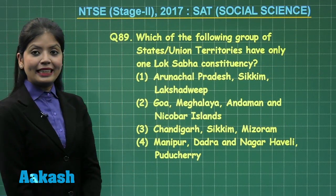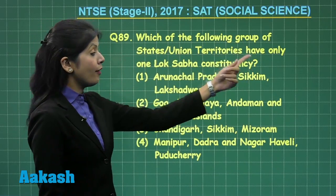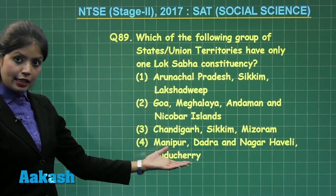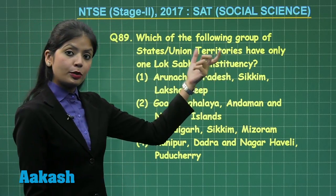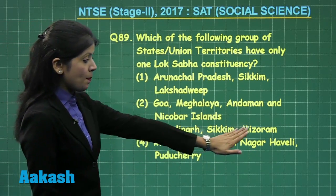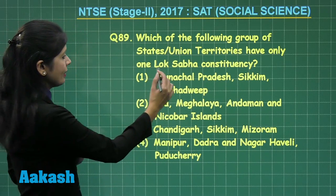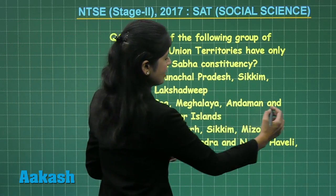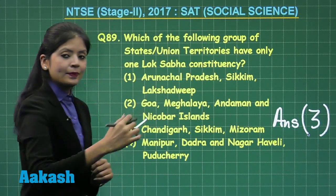Let's look at question number 89: which of the following group of states or union territories have only one Lok Sabha constituency? When analyzing the options, I need to pick a series where only one Lok Sabha constituency is identified. Looking carefully, Chandigarh, Sikkim, and Mizoram all have only one constituency each, so option three is the correct answer.